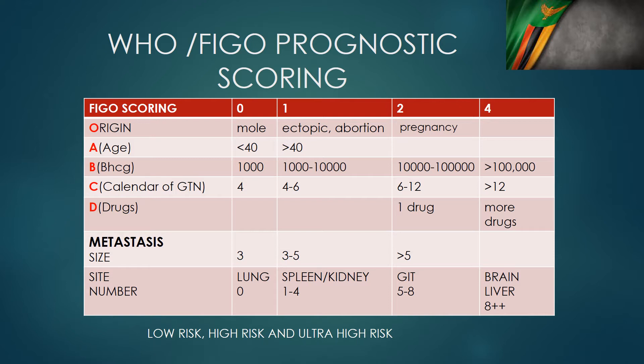The first parameter is Origin — where did this tumor come from? Did it come from a mole, a partial or complete mole, an ectopic pregnancy, a miscarriage, or a term pregnancy? For example, my last GTN patient delivered a 3.5 kg baby, and four months later presented with vaginal bleeding. We made the diagnosis of gestational trophoblastic neoplasia and referred her to the cancer disease hospital.